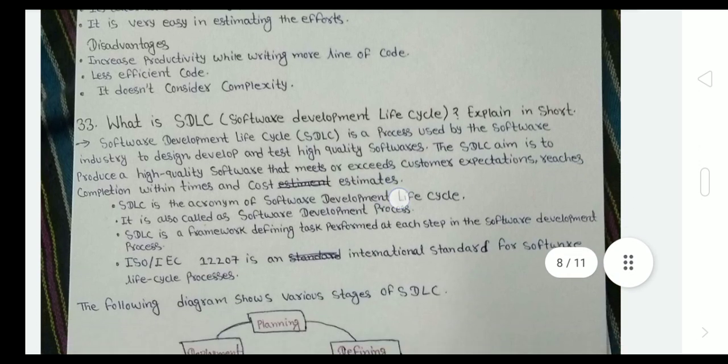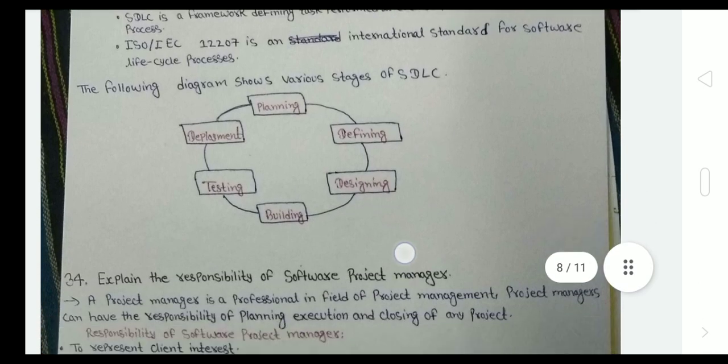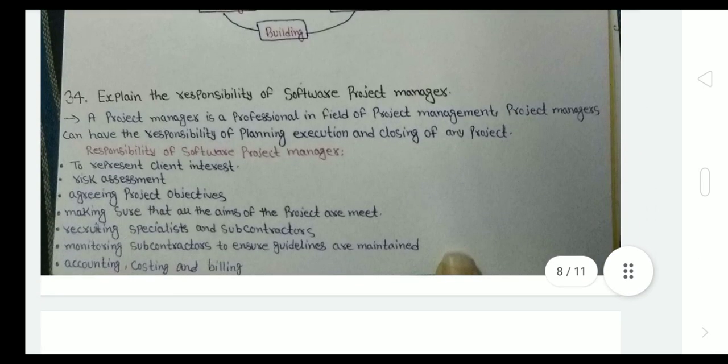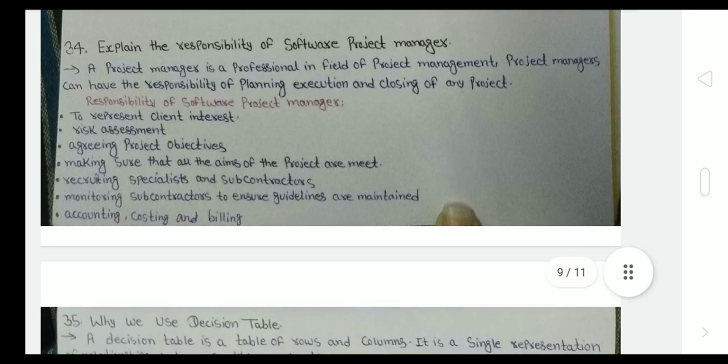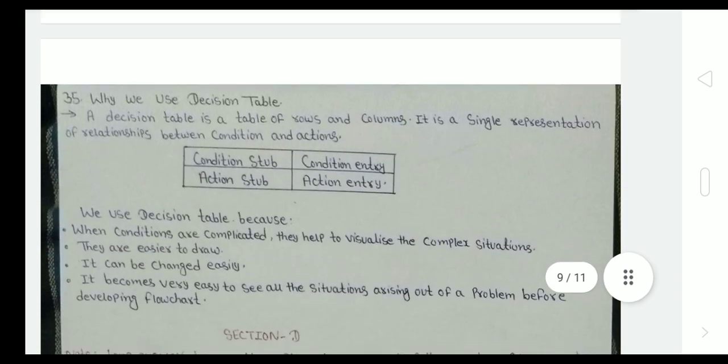What is the advantage and disadvantage of LOC, Line of Code? You can see here. What is SDLC, Software Development Life Cycle? This chapter is so easy. Explain the responsibility of software project manager. We don't have to memorize these things. As you all know what a manager does, just write the things that a manager does. Why we use decision table - condition stub, condition entry, action stub. These things we have to memorize.